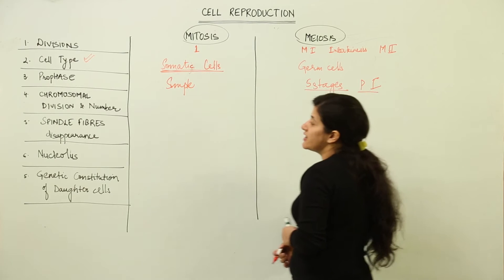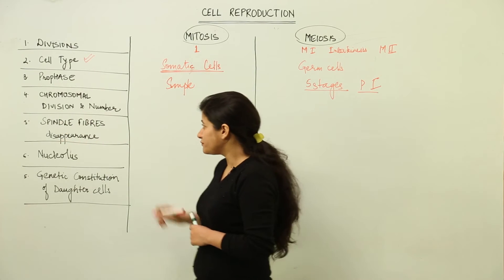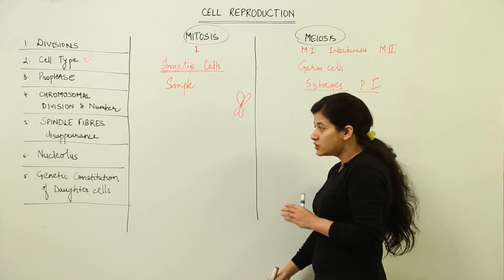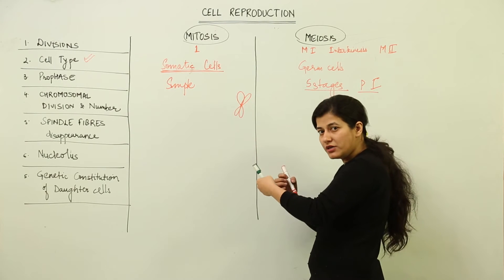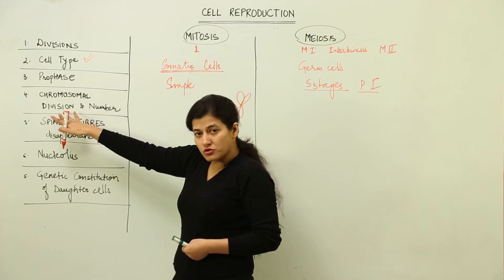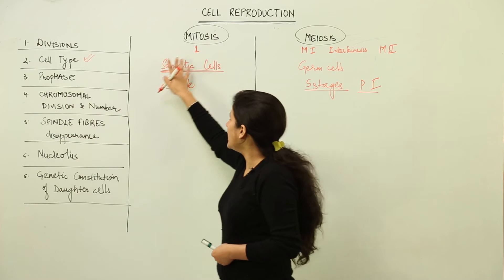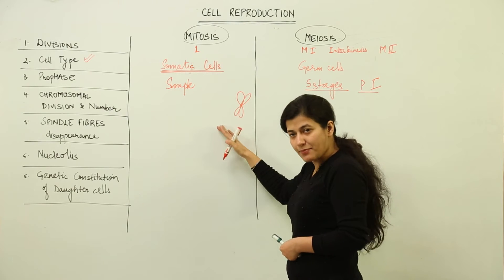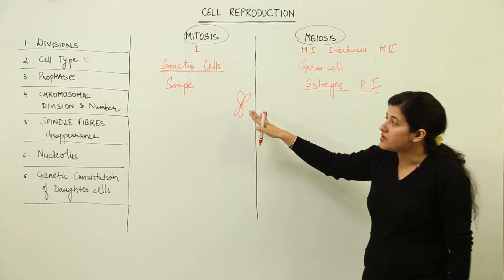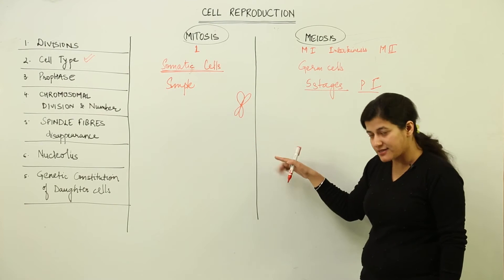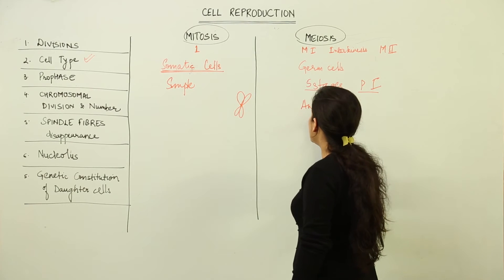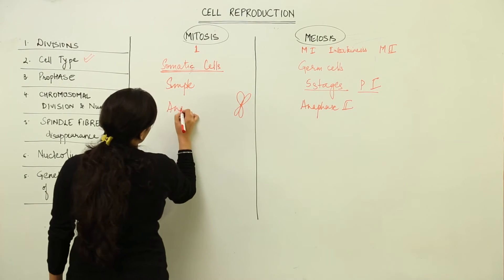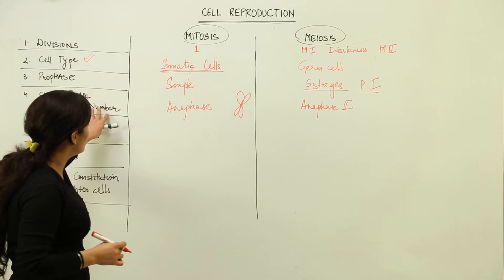Then we talk about chromosomal division and number. When I consider a chromosome, I'm including both sister chromatids. Chromosomal division refers to whether the centromere is splitting or not — essentially we are talking about anaphase. In anaphase of mitosis, the centromere does split and sister chromatids are separated. In meiosis, centromere splitting also takes place, but not in anaphase one — it takes place in anaphase two.